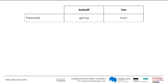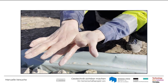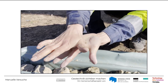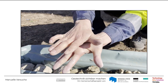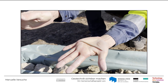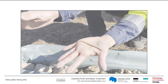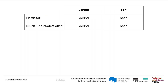Während Schluff eine geringe Plastizität besitzt, weist eine hohe Plastizität auf einen Ton hin. Auch der benötigte Druck zum Rollen der Walzen sowie die Zugfestigkeit dieser Walzen sagen etwas über den Schluff- bzw. Tongehalt der Probe aus. So kann Schluff nur geringe Druck- und Zugkräfte aufnehmen und beginnt schnell zu bröckeln – er zeigt eine geringe Zähigkeit. Ton hingegen besitzt eine deutlich höhere Druck- und Zugfestigkeit und zeigt damit eine hohe Zähigkeit.